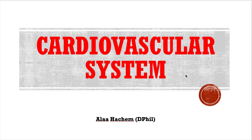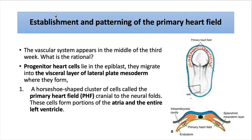Today we'll be speaking about the development of the cardiovascular system. The process starts by the establishment and patterning of the primary heart field. The vascular system appears in the middle of the third week of embryonic development. The progenitor heart cells lie in the epiblast, the ectodermal germ layer of the embryo. They migrate from the epiblast cell layer into the visceral layer of lateral plate mesoderm, where they form two structures — the first one a horseshoe-shaped cluster of cells called the primary heart field, as shown in this picture.